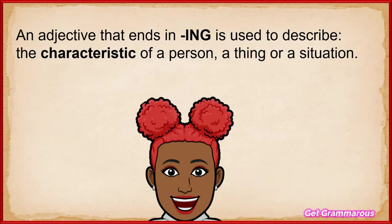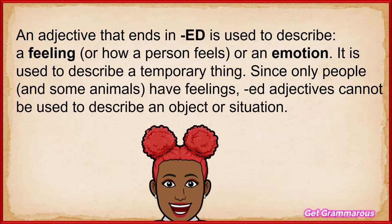An adjective that ends in ING is used to describe the characteristic of a person, a thing, or a situation. An adjective that ends in ED is used to describe a feeling, or how a person feels, or an emotion. It is used to describe a temporary thing. Since only people and some animals have feelings, ED adjectives cannot be used to describe an object or situation.